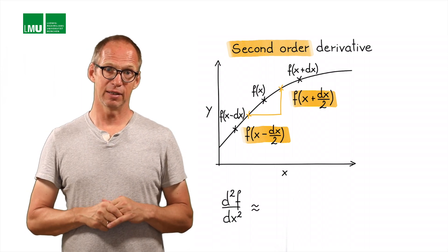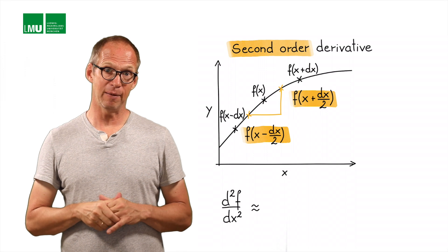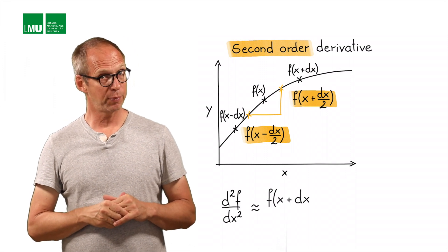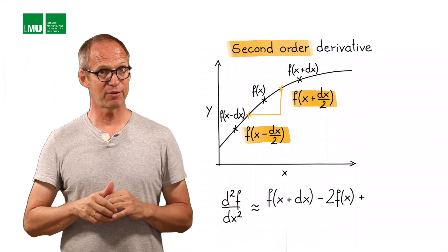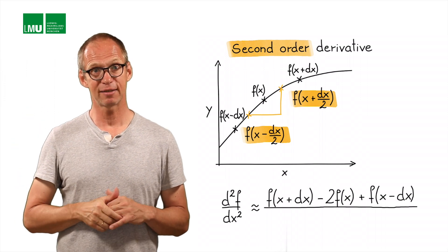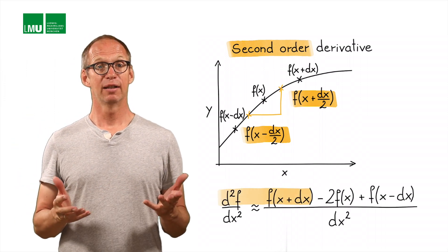f of x plus dx minus 2f of x plus f of x minus dx divided by dx squared. Again, there must be an approximate sign because certainly this is not an exact second derivative.